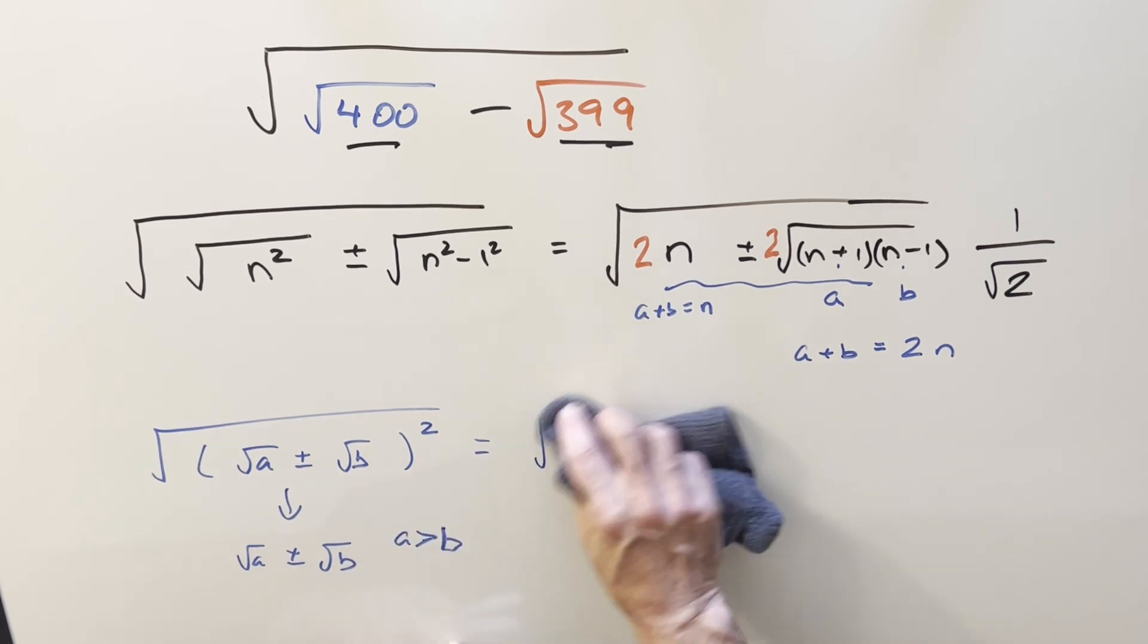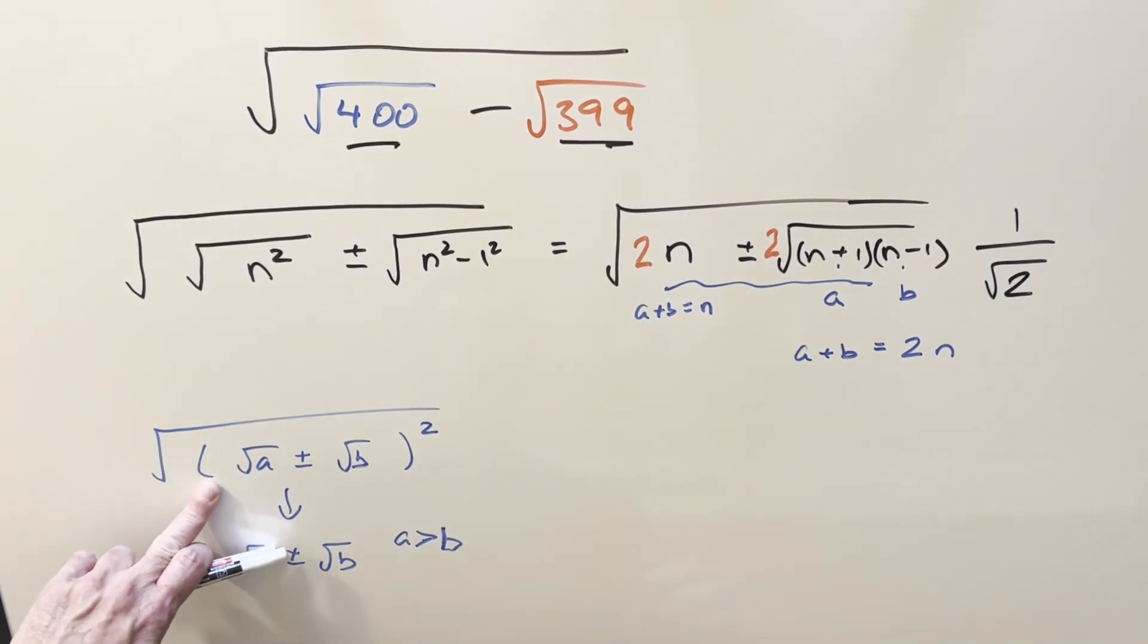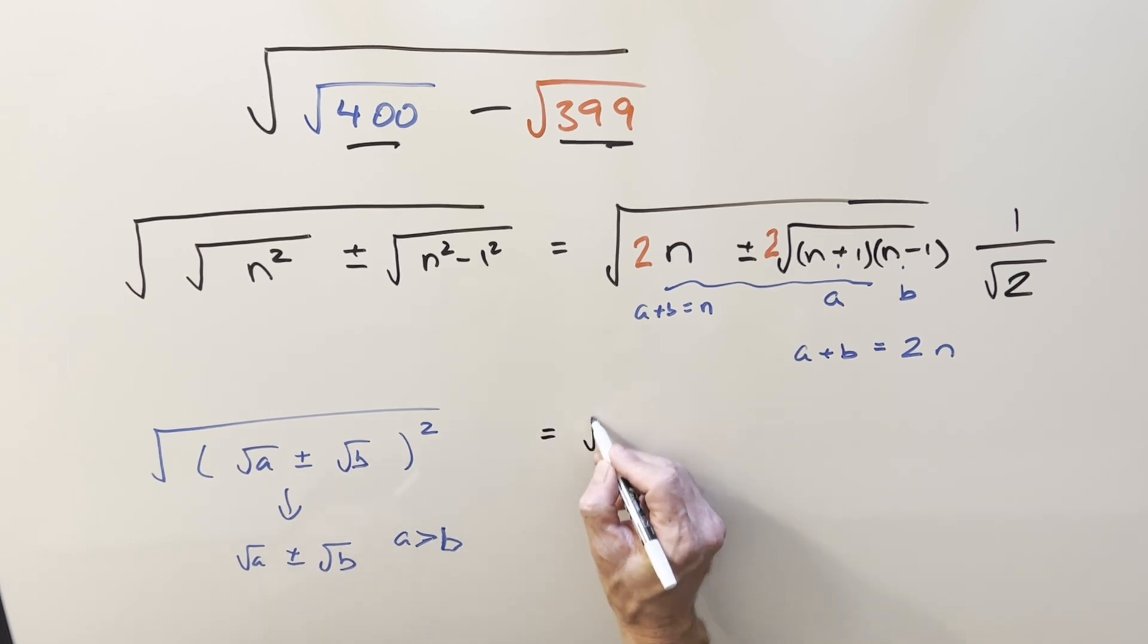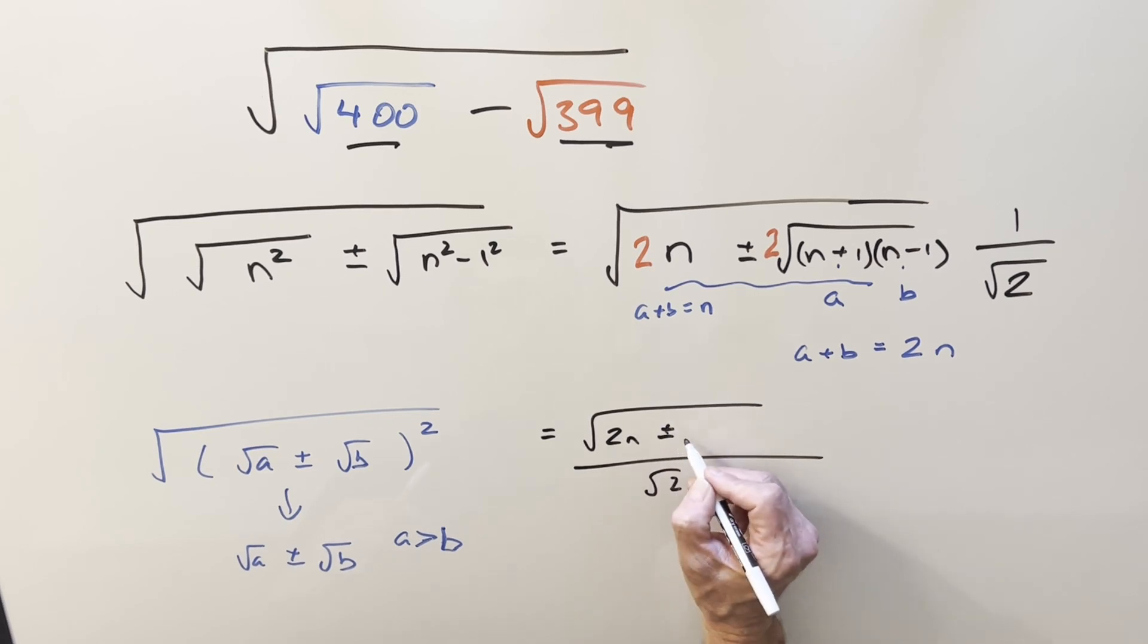But now we're perfectly set up. We have everything lined up this way where we can write it like this. So let me just rewrite the expression so we're clear about it. We have it all over this square root of two that we multiplied in. Then we're going to have two n plus or minus two times this. We want to write it in this form here.